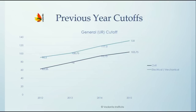Now let's look at the open category cutoff for the last few years. The light blue line represents the section relevant to you — the Electrical and Mechanical Engineering section. Analyzing this line graph, in 2012 the cutoff was 90.5; in 2013 it increased by 10 marks to 100.75; by 2014 it increased by 17 marks to 170.5; and in 2015 it increased by 14 marks to 131. So we can approximate that this year's cutoff would be nearly 145 to 147 for the open category in the Electrical Mechanical section.